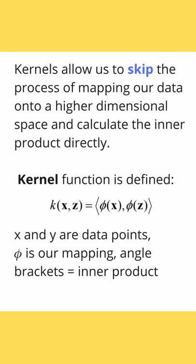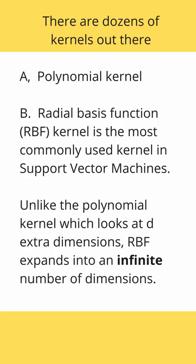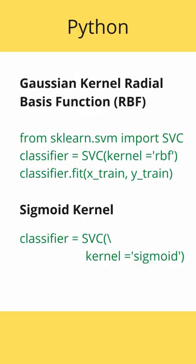Kernels allow us to skip the process of mapping our data into a higher dimensional space. Kernels need to be continuous, symmetric, with non-negative eigenvalues. The radial basis function is very famous for infinite dimensions. You can implement it in Python.